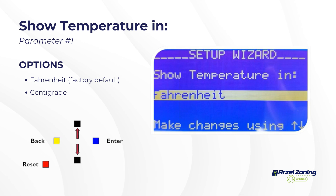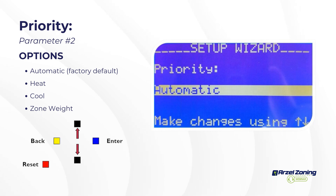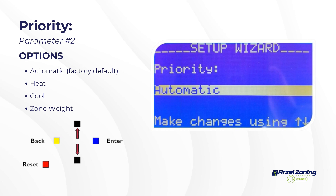You can select your zone priority. Automatic is the factory default and covers the vast majority of applications. However, some situations require a priority set to heating or cooling — for example, if someone in the house is on oxygen or has COPD and can't handle heat, you would set the priority to cooling so that zone is served first for their comfort.